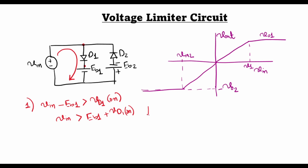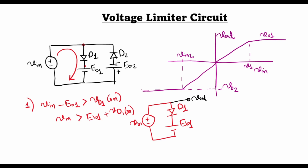Under this condition, diode D2 will be reverse biased, and we are left with a circuit consisting of VIN in series with the series combination of D1 and Eb1. From this it is easy to see that V_out will equal Eb1 plus the diode on-drop of D1, which is constant with respect to the input voltage. So we write V_out1 = Eb1 + Vd_on1, and this corresponds to the upper clamped region of the input-output characteristic.